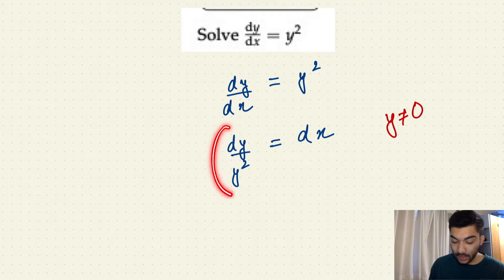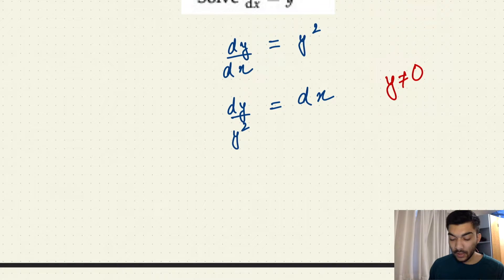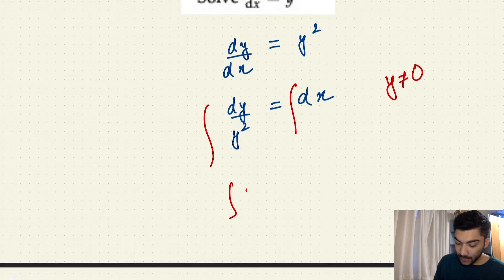And now after applying the constraint to your differential equation, we can move forward to integrate both sides. So if we integrate both sides, the left-hand side is basically y to the power minus 2 dy equals integral dx.